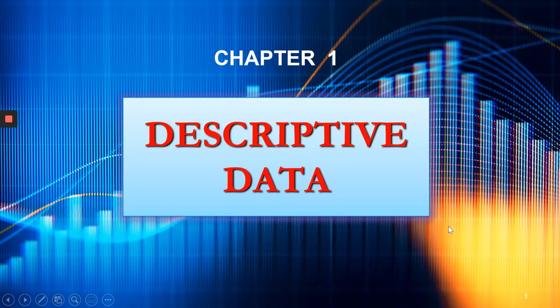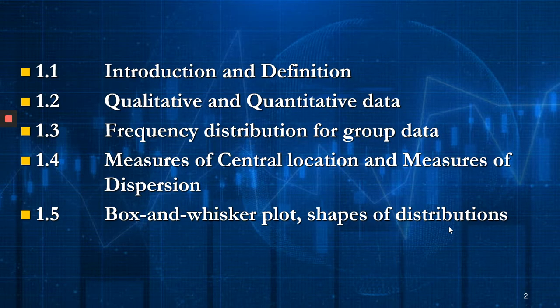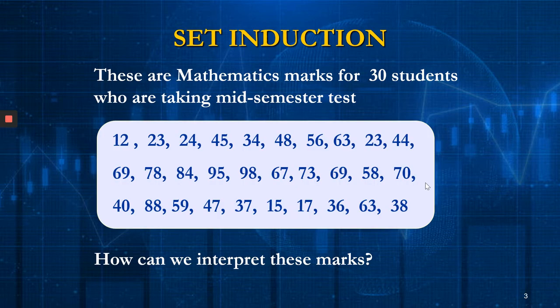Assalamualaikum, today we will learn Chapter 1, which is Descriptive Data. In this chapter we have five subtopics: the first one is introduction and definition, the second is qualitative and quantitative data, the third is frequency distribution for group data, the fourth is measures of central location and measures of dispersion, and the last one is box-and-whisker plot and shapes of distributions.